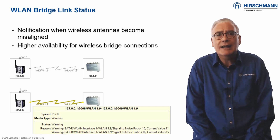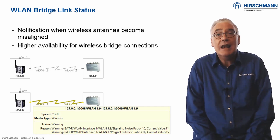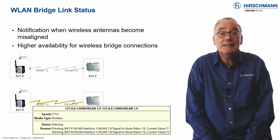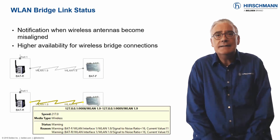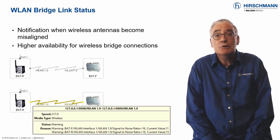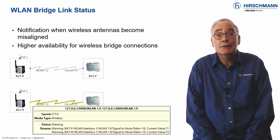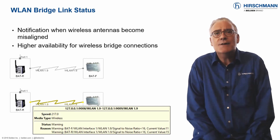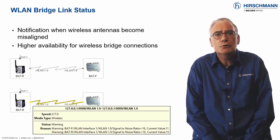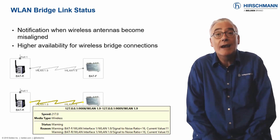Industrial HiVision can generate alarms when the antennas start to become misaligned. This gives you time to readjust the antennas before the bridge link fails, helping you to ensure reliability of the link.